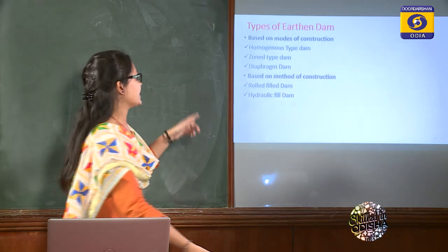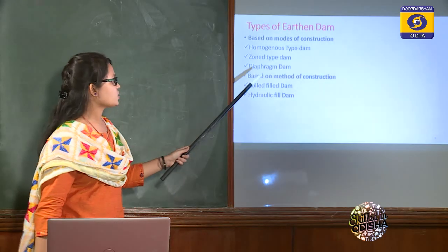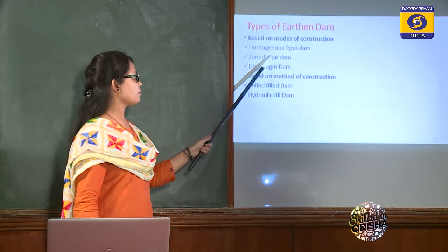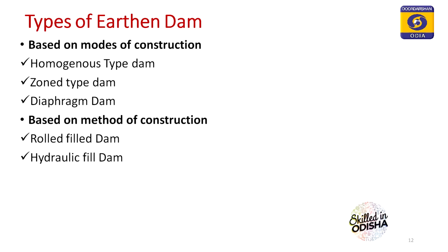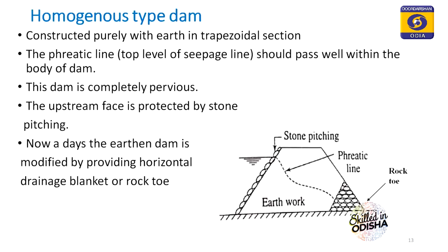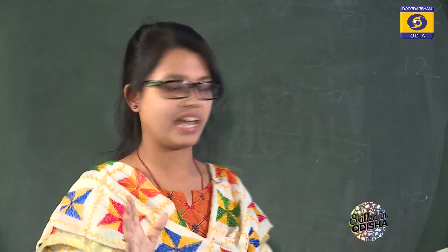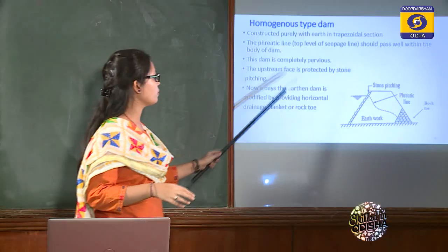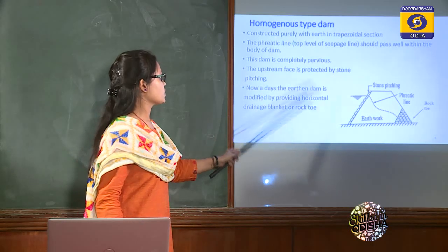Types of earthen dam based on mode of construction: homogeneous type, zoned type, and diaphragm type. Based on method of construction: rolled fill and hydraulic fill. The homogeneous type is made up of a single material — only earth in a trapezoidal section.